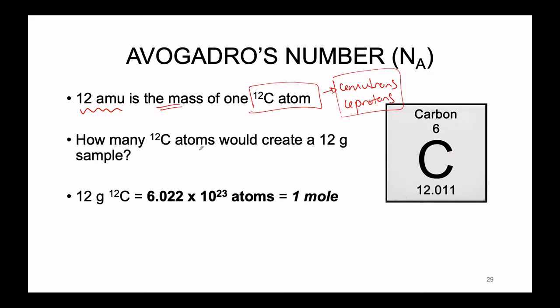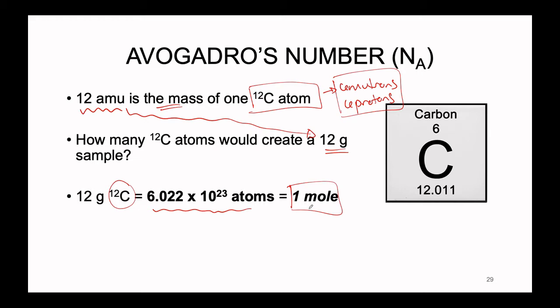So the question was asked: how many carbon-12 atoms would be needed to create a perfect 12 gram sample? The gram, being a unit more appreciable on the macroscopic scale — how many carbon atoms would cause the mass of this chunk of carbon to equal 12 grams? What we found through experimentation was that 12 grams of carbon-12 would be comprised of Avogadro's number worth of atoms — 6.022 times 10 to the 23rd atoms — and this was defined as being equal to 1 mole. So not only are the masses on the periodic table standardized to carbon-12, but the mole is also standardized to carbon-12 to make sure everything is self-consistent.